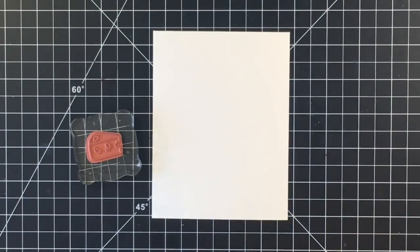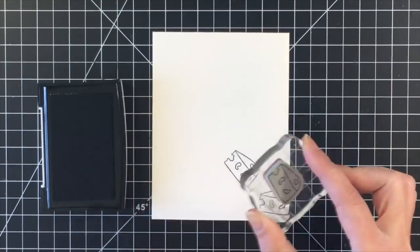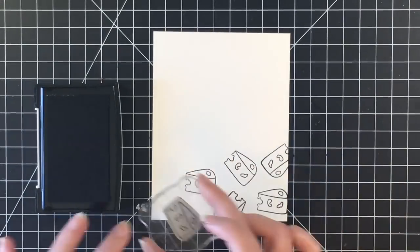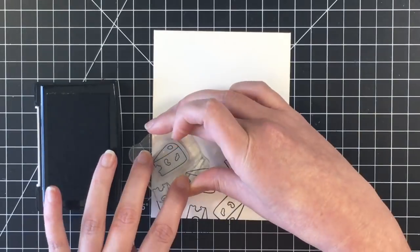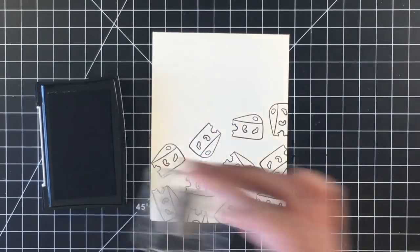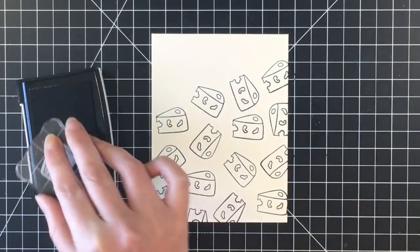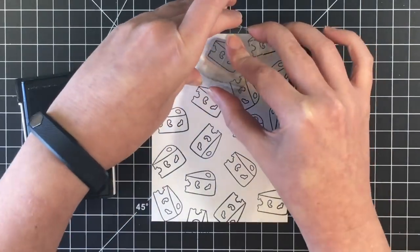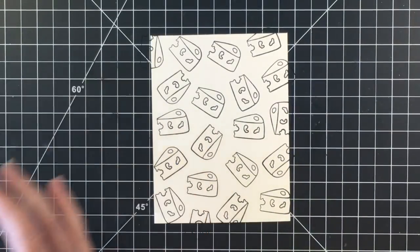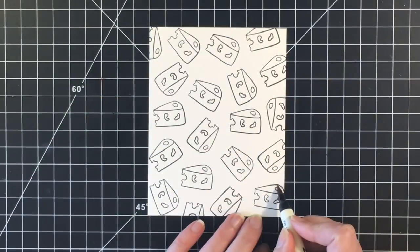I'm starting off using some Canson XL watercolor paper and my VersaFine Black Onyx ink, and I'm using this block of cheese and I'm going to do a background, almost like a patterned paper. I haven't done this in a while and I thought that this little block of cheese would be the perfect image for a really cute background with the graters as the focal point of the card.